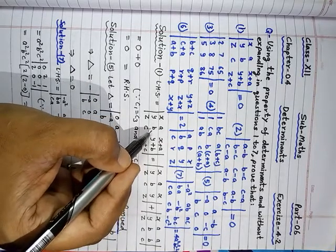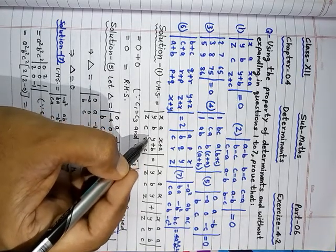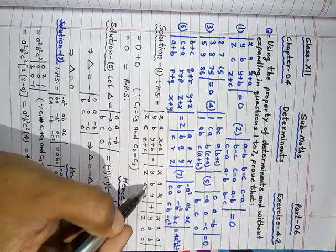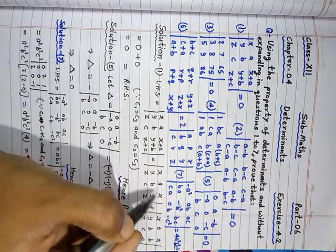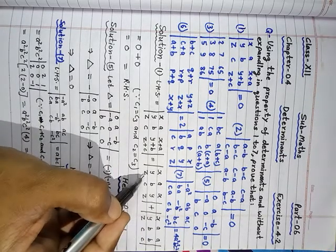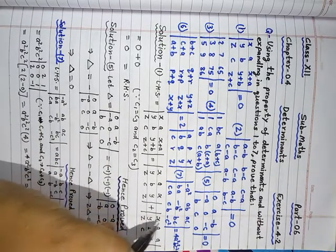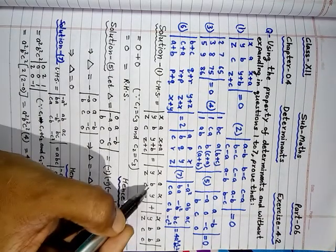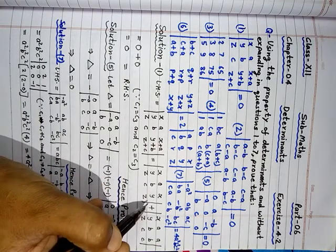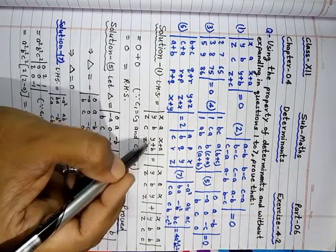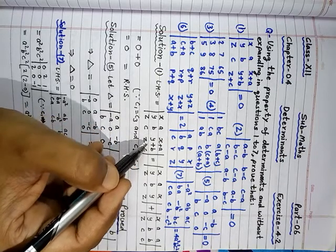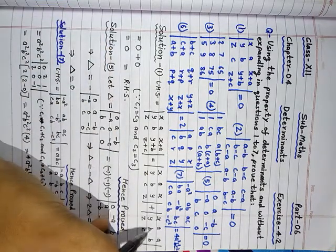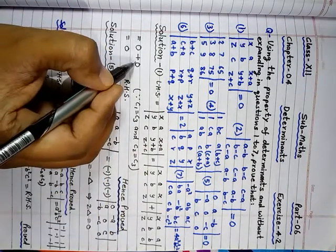Now, you can break this determinant into two separate determinants like x, y, z, a, b, c, x, y, z and x, y, z, a, b, c, a, b, c. These two determinants having the add equal to this determinant. And now you can say first determinant is equal to 0 plus second determinant is also equal to 0.